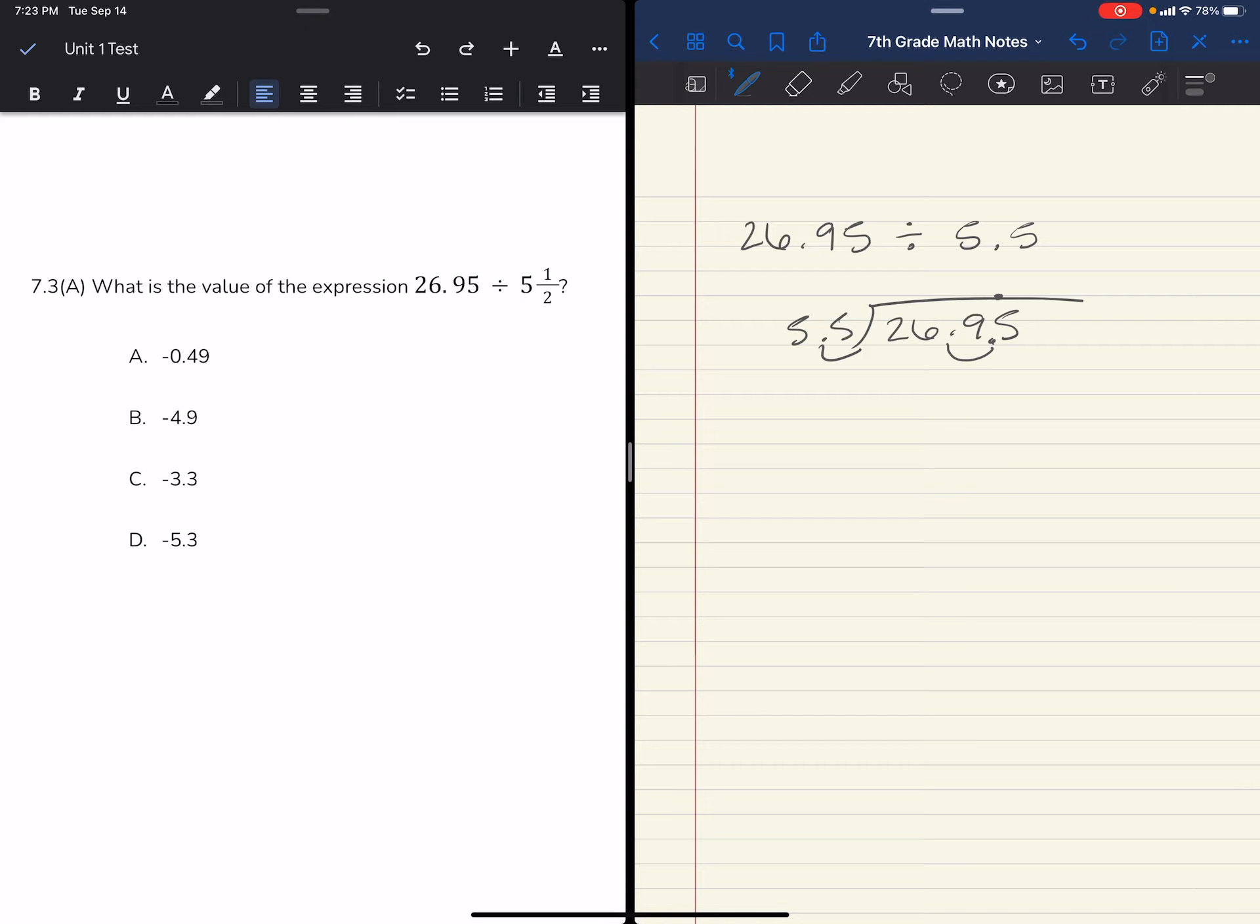55 can go into 2, 0 times. 55 can go into 26, 0 times. 55 can go into 269, I don't know how many times. So I'm going to do a guess and check here.